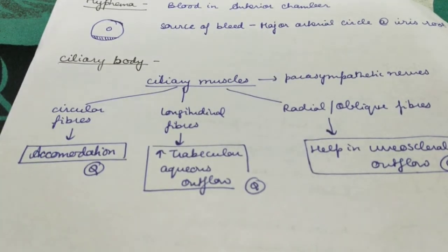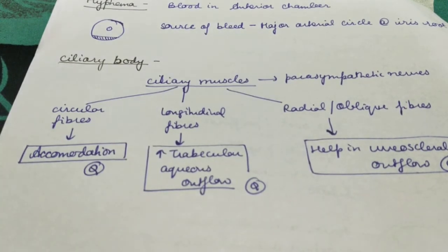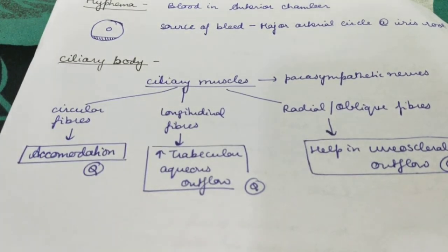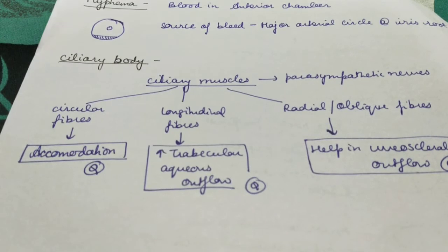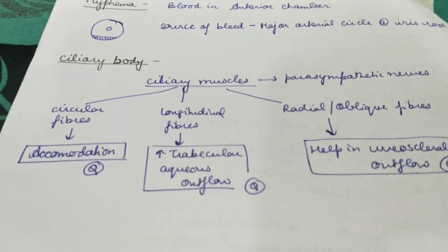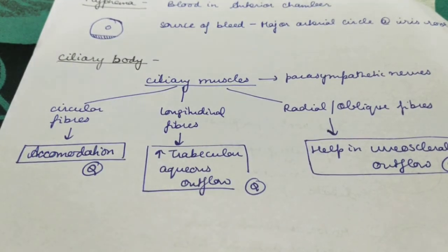The second part of the uvea is the ciliary body, which consists mainly of ciliary muscles that receive parasympathetic innervation. There are three types of fibers: longitudinal fibers, radial (oblique) fibers, and circular fibers. The circular fibers are mainly responsible for accommodation. The longitudinal fibers increase trabecular meshwork outflow, and the oblique fibers help in uveoscleral outflow.